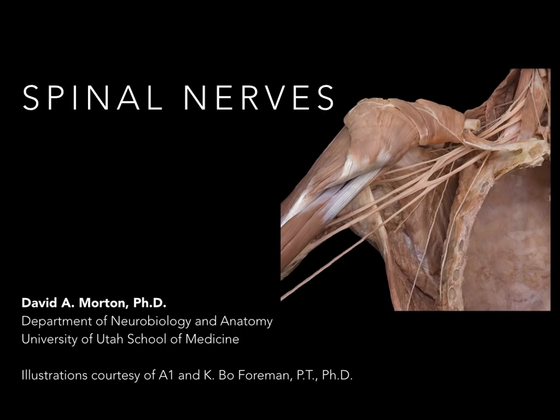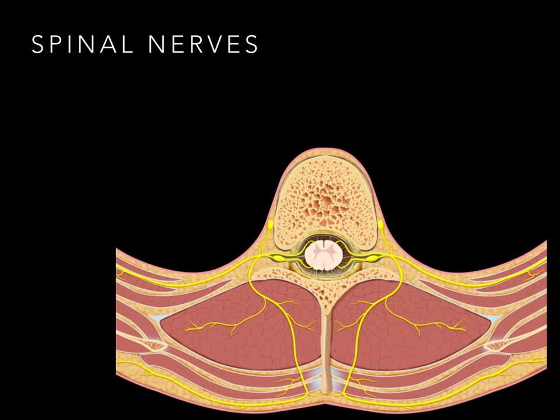Let's next talk about spinal nerves. Here we have a cross-section through a thoracic vertebra with an associated spinal cord and spinal nerve levels. To understand spinal nerves, there are a couple of things we need to know: roots, spinal nerve trunk, and then the rami.